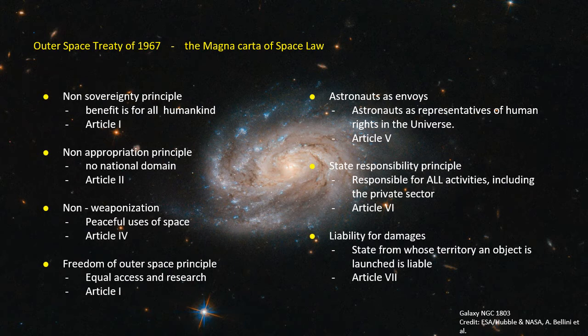For instance, if a satellite collides with another satellite in space, the government must pay remedies for the damage to the other government. This is extremely relevant considering the spike of space objects being launched and the amounts of space debris accumulating around Earth.